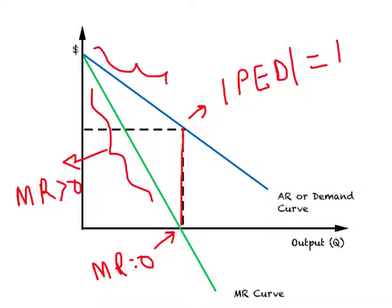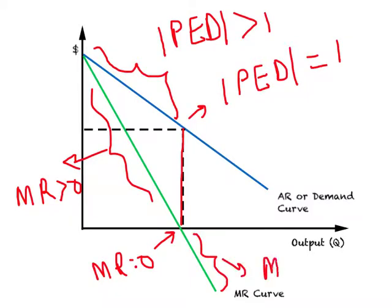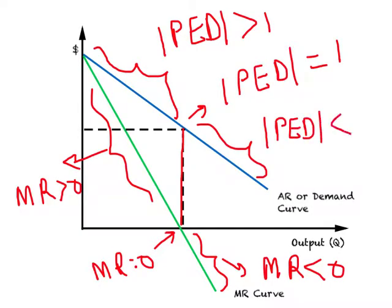Where MR is positive, price elasticity of demand in absolute value is greater than 1. Where MR is negative, price elasticity of demand in absolute value is less than 1. This completes our current lecture video. In the next lecture video we will get into the specifics of one type of less than perfect competition called monopoly.